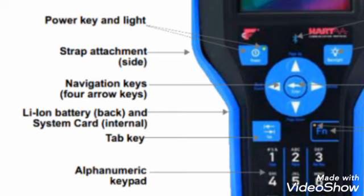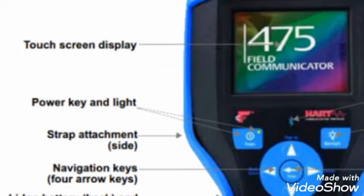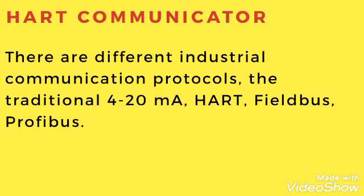Here are the alphanumeric keys, the tab key, and the battery system card which is inside this. There is also a navigation key, a strap, the power key, and the power light.